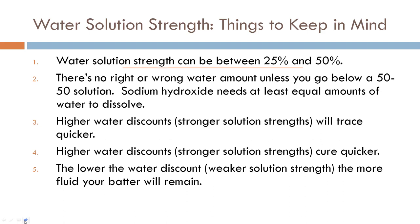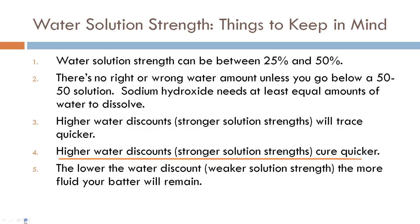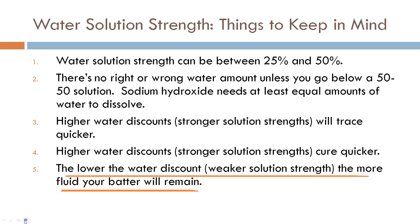A few things to keep in mind when talking about water solution strength: the solution strength can be between 25 and 50% — it absolutely cannot be higher than 50, and I really don't recommend going lower than 25. There's no right or wrong water amount, unless you go below a 50/50 solution strength — sodium hydroxide needs at least equal amounts of water to dissolve. Higher water discounts, or a stronger solution strength, will trace quicker; the less water you have, the quicker to trace.